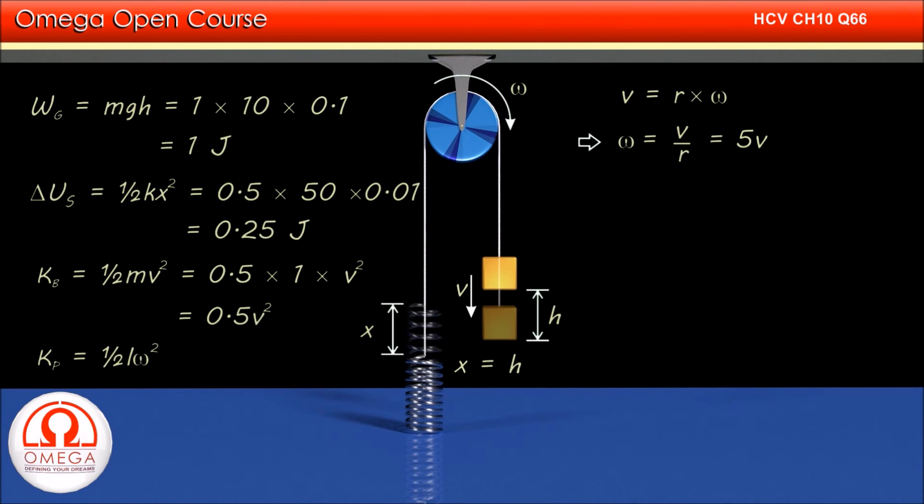Rotational kinetic energy of the pulley is ½Iω². Putting I = 0.2 and ω = 5v, we get the rotational kinetic energy as 0.5 × 0.2 × 25v² = 2.5v².